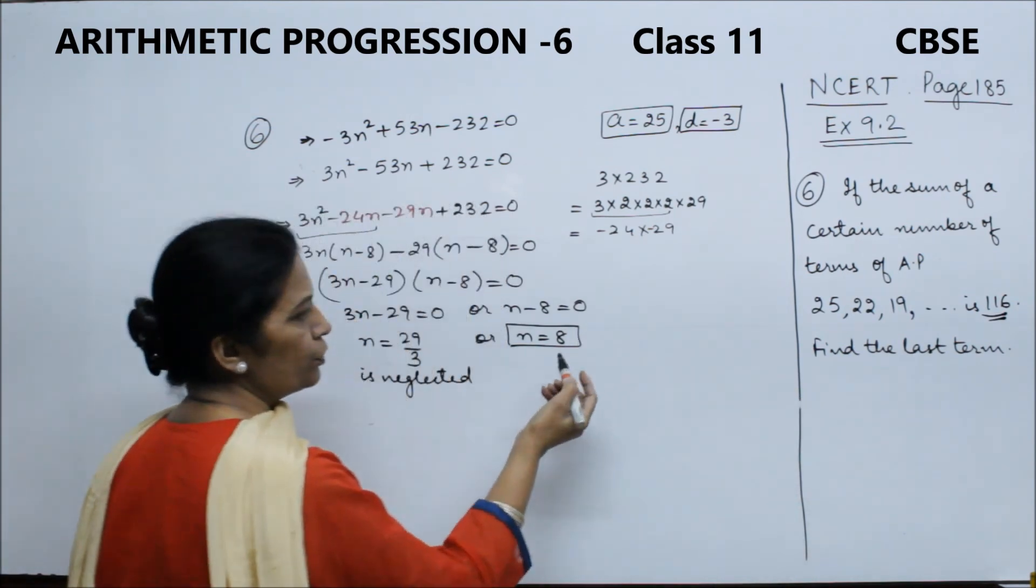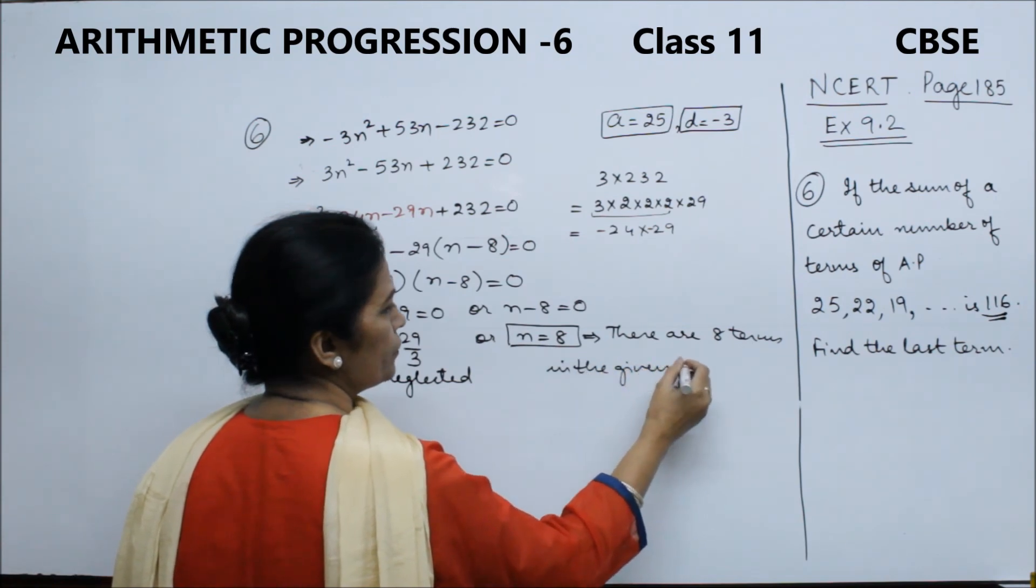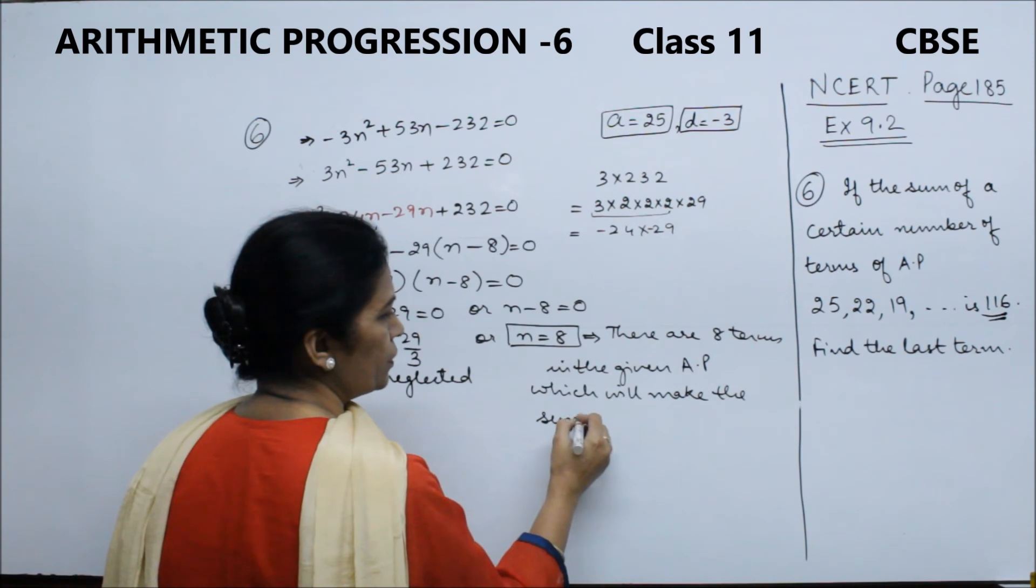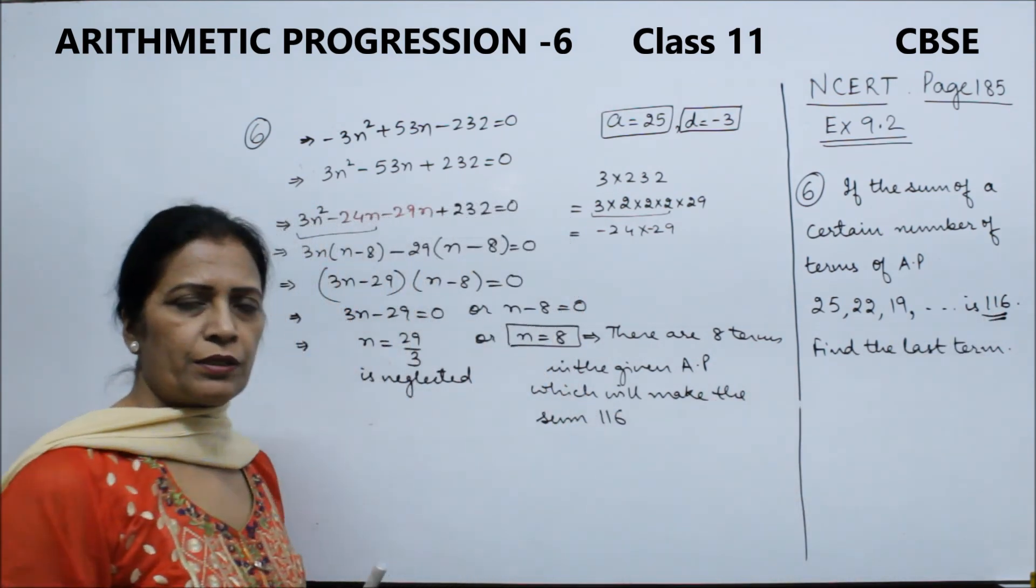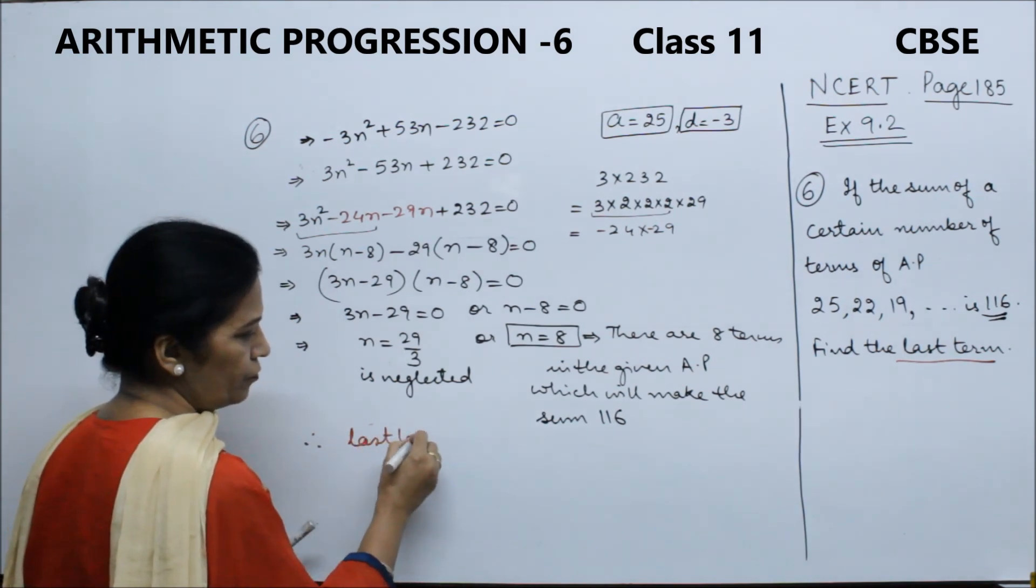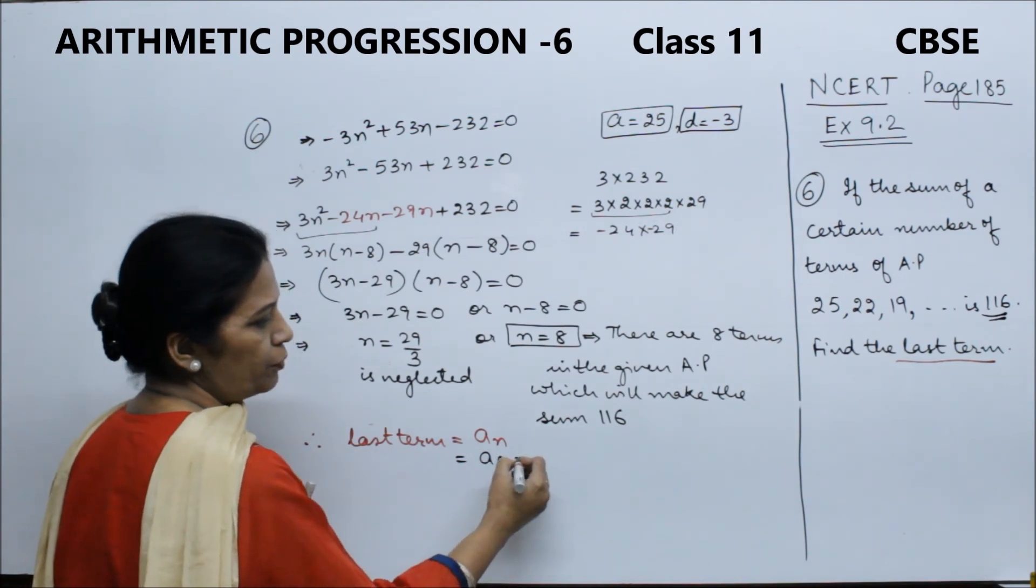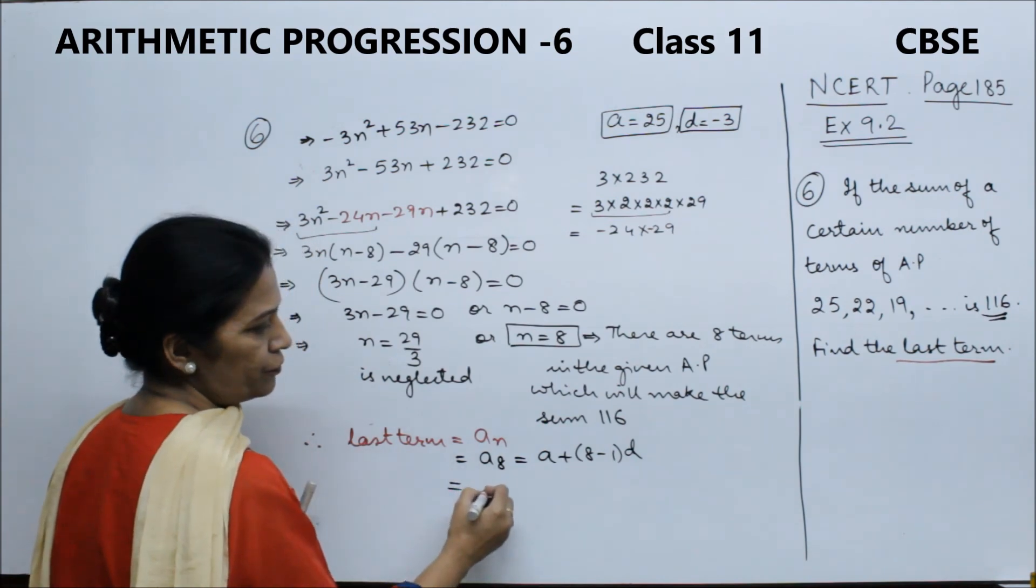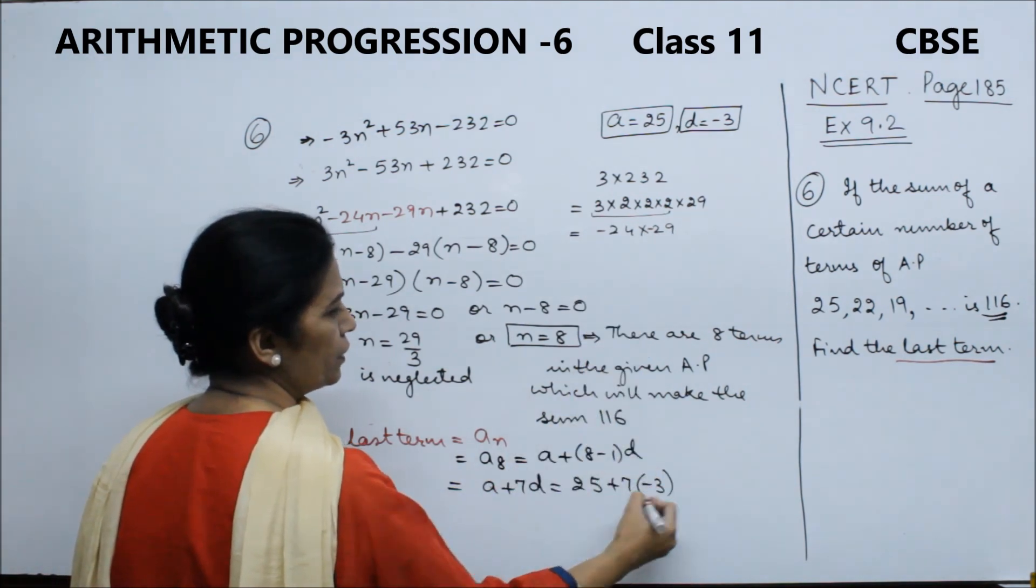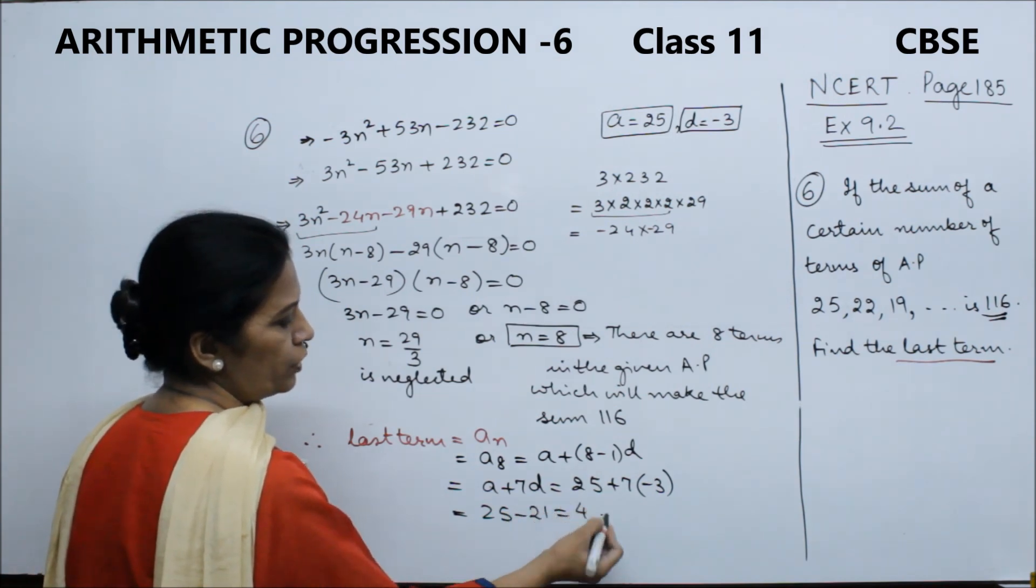We need to find the last term. n is equal to 8, so there are 8 terms in the given AP which will make the sum 116. But the last term we will find. Therefore, last term is nothing but the nth term: a8 equals a plus 7d, which is 25 plus 7 times negative 3, equals 25 minus 21, equals 4. That means the last term is 4.